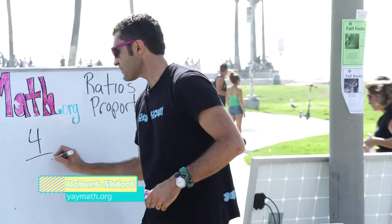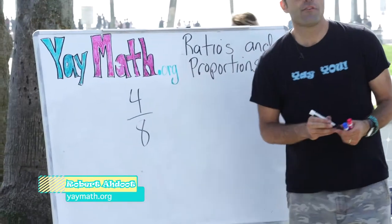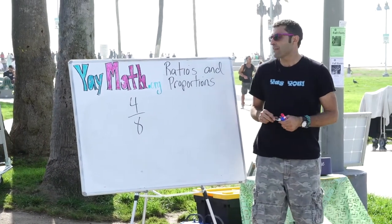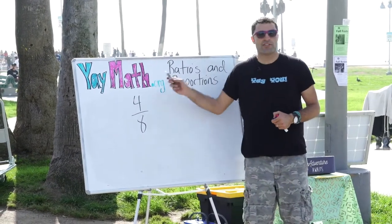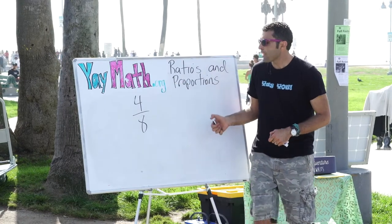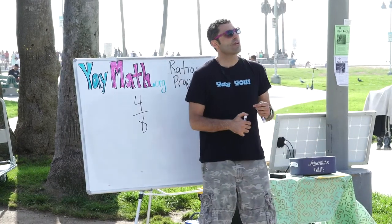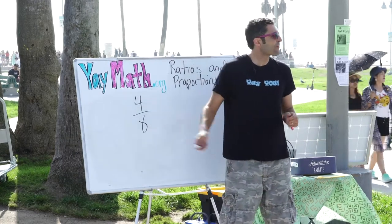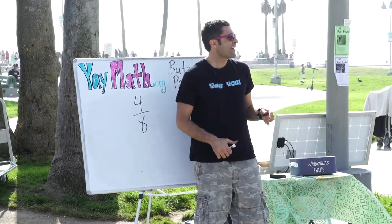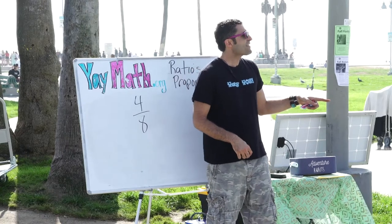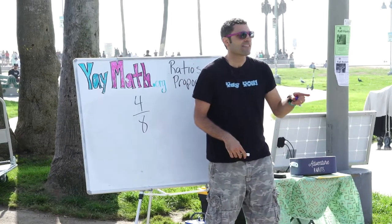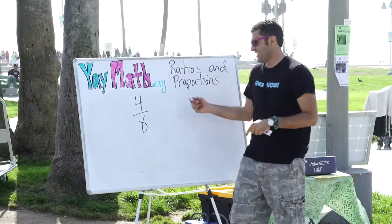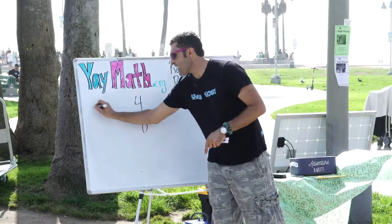Let's say four over eight. So four over eight is called the ratio. And if you wanted to honor the ratio, you can think of what it would simplify to. Can you tell me what four over eight would simplify to? Four eighths is the same as what fraction? One half. There it is. So it's one half. That's right.